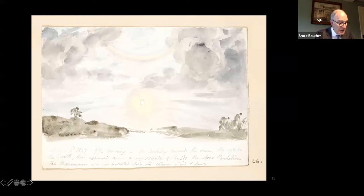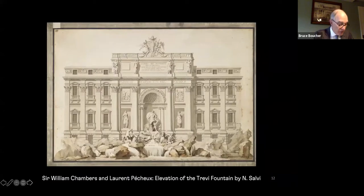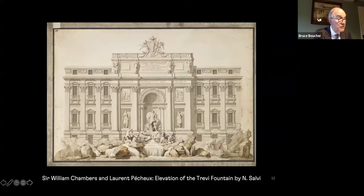To understand Gandy, one should bear in mind that he was part of a contemporary trend described by his teacher of perspective at the Royal Academy, Edward Edwards, as 'poetic or composite landscapes,' which were recommended as an exercise for architects and topographers. Such works grew out of the recognition that conventional architectural draftsmanship — like this drawing by William Chambers and Laurent Pichot for the Fountain of Trevi in Rome — were primarily addressed to professionals and connoisseurs rather than to the general public.